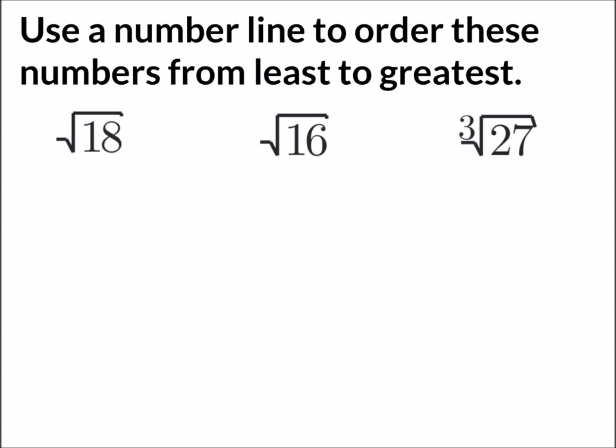Get started by looking at the square root of 18. We know that number falls between two squares, which are the square root of 16 and the square root of 25. Those equal 4 and 5 respectively, which means the square root of 18 must fall between 4 and 5.